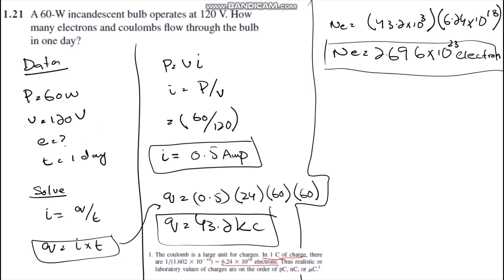Hello everyone, today we are going to solve question number 1.21. The question is: a 60-watt incandescent bulb operates at 120 volts. How many electrons and coulombs flow through the bulb in a day?